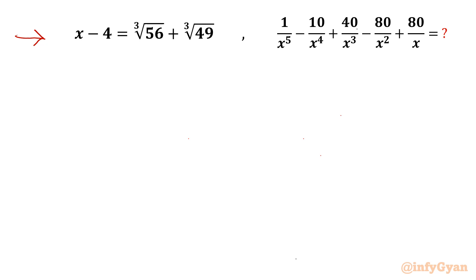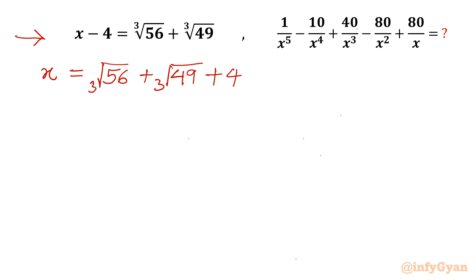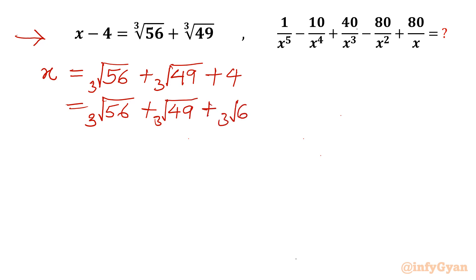Let us write all the constant terms to the right hand side. I will add 4 to both sides, so I can write the equation as x equals cube root of 56 plus cube root of 49 plus 4. Now we can write this 4 as cube root of 64, since 4 is the cube root of 64.